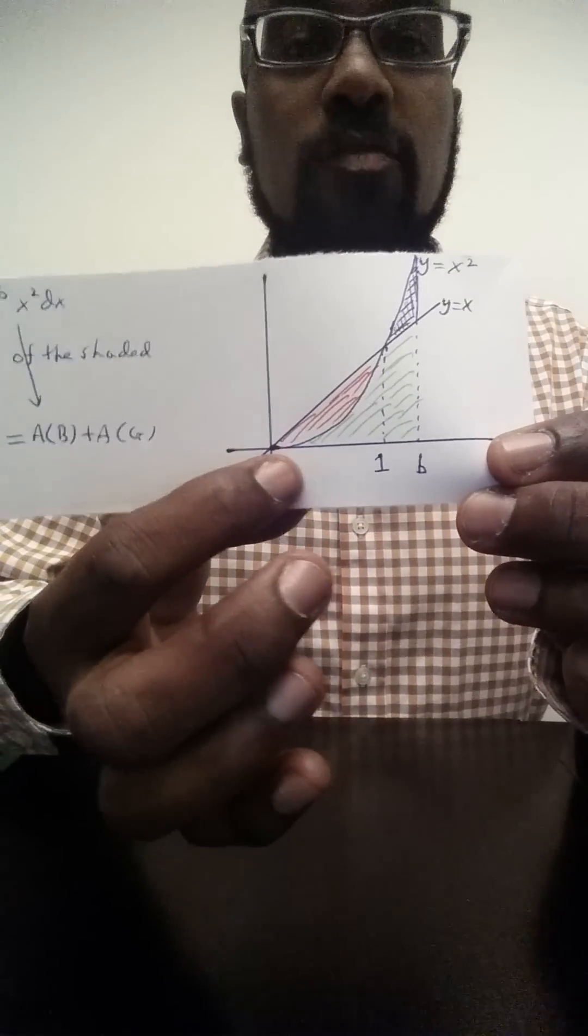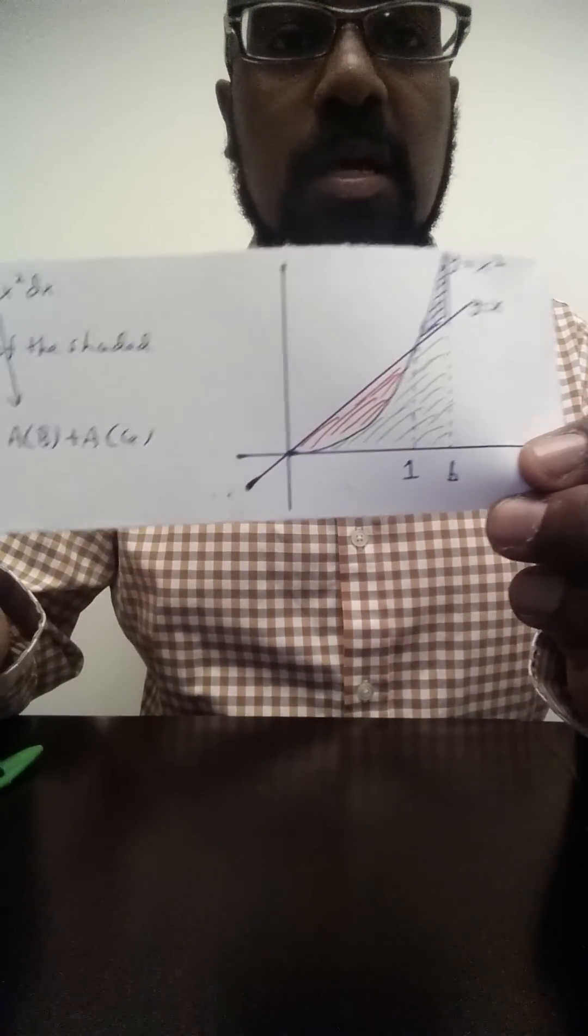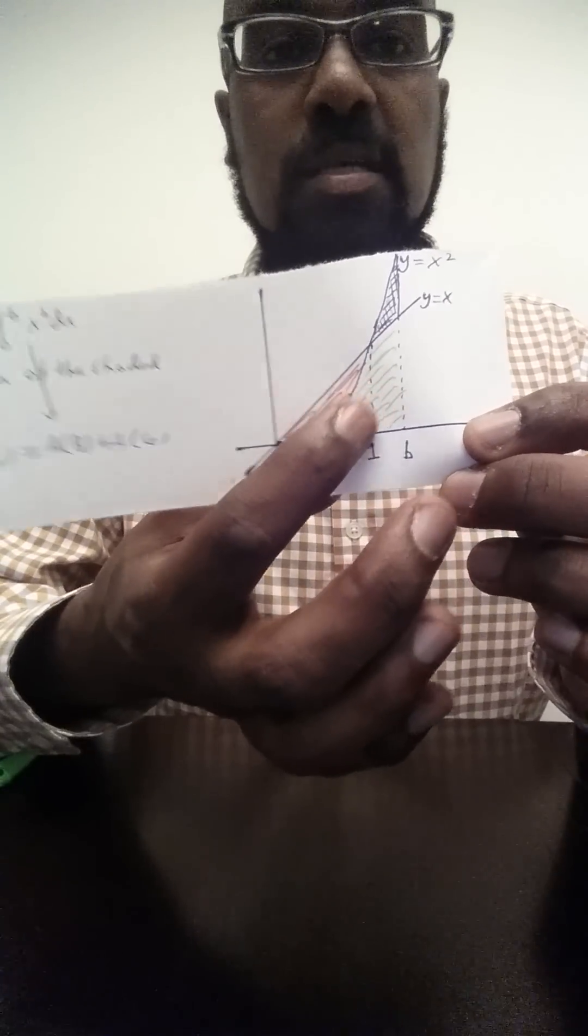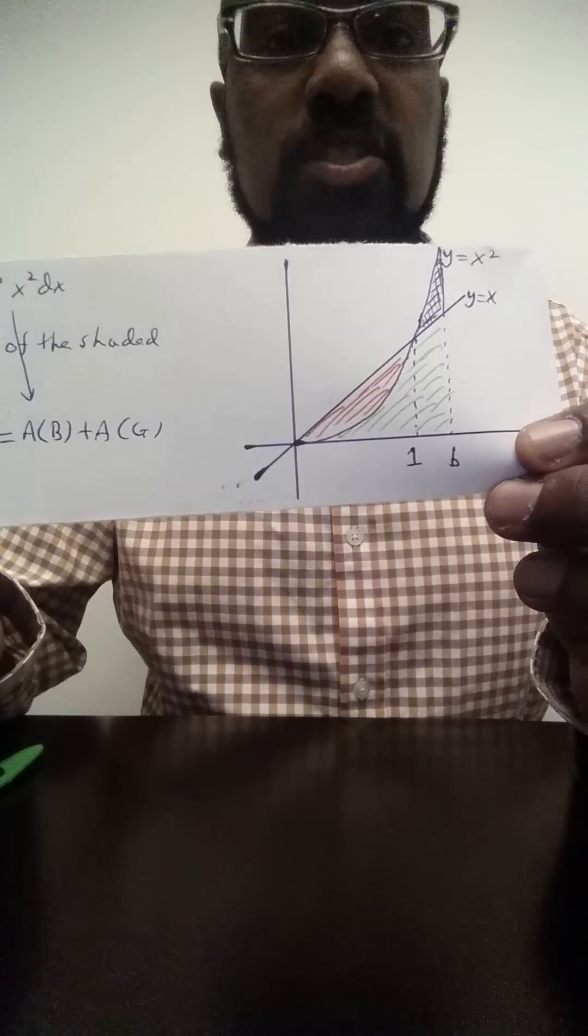But that's an integral from 0 to 1, and it's the integral from 0 to 1 of the function above, which is x, minus the function below, which is x squared.